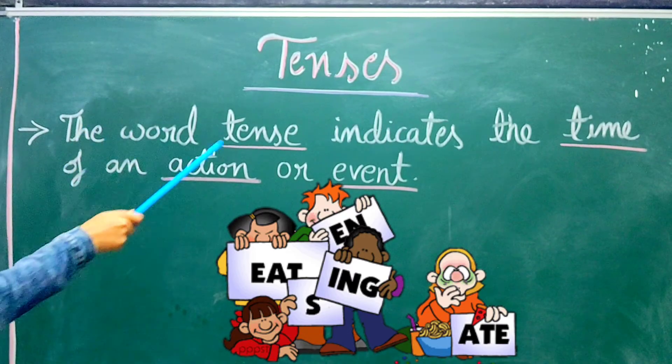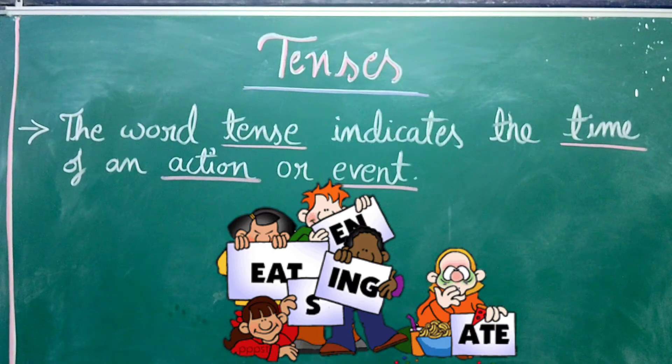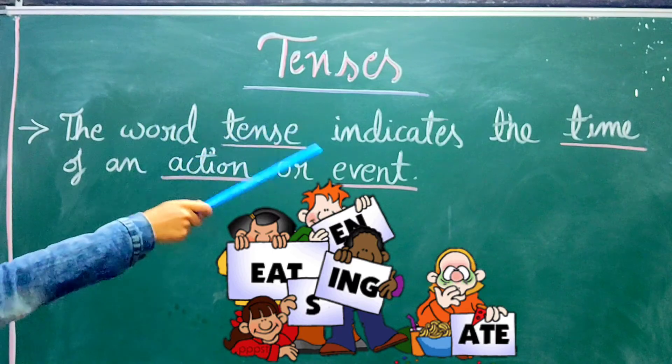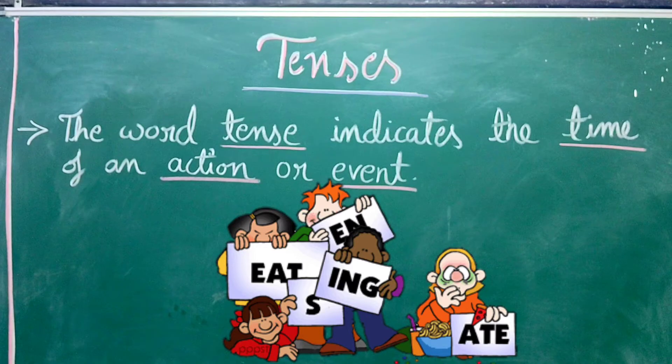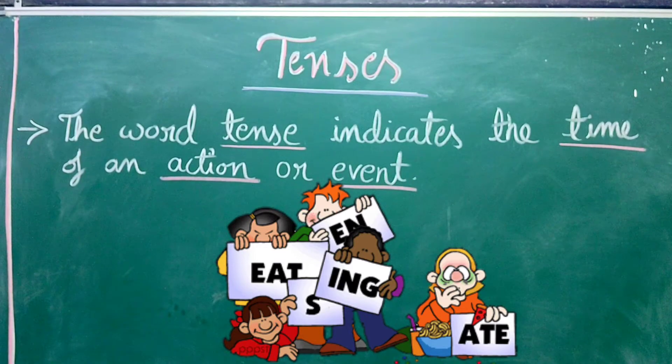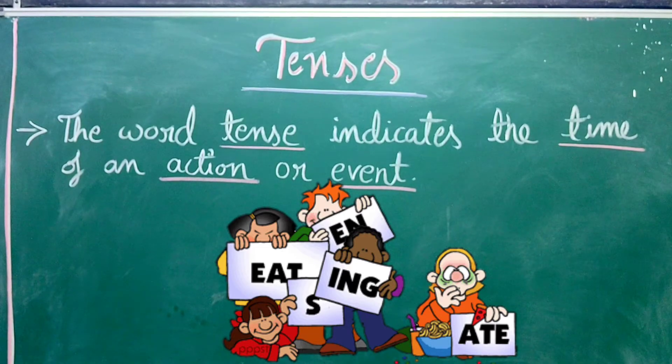The word tense indicates the time of an action or event. So can you see the topic highlighted? Tense, time, action, event. But why? Because these are the four terms that you need to always remember when it's about tenses. We just need to know the time of an action or event. And that is what we call as tenses.